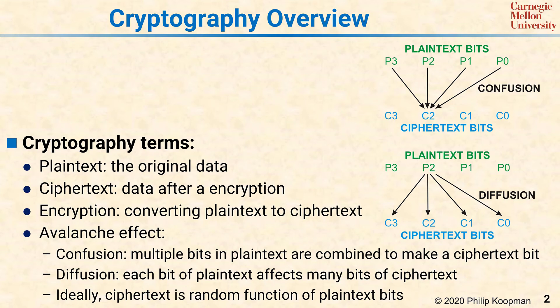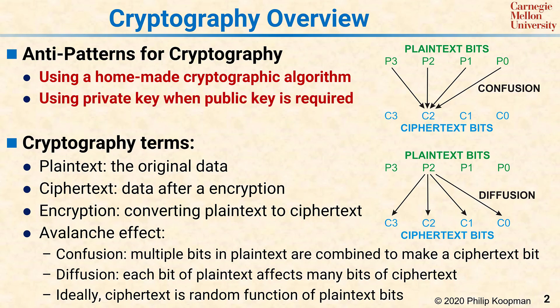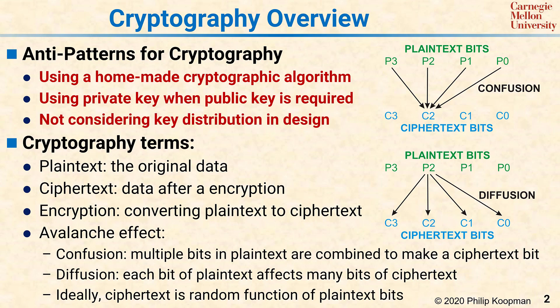There are some common anti-patterns for poor use of cryptography. One is using a homemade cryptographic algorithm — simplistic algorithms can be broken, and you need to use professionally available, publicly scrutinized algorithms to have any chance of making your cryptography good. The next one is using private keys when a public key algorithm is required. And the last one is not thinking about key distribution during the design process, where keys are the secret that enables you to convert the plain text to ciphertext and back.